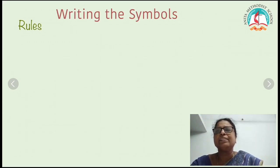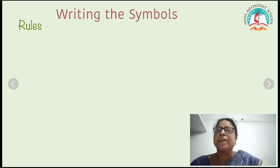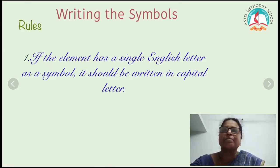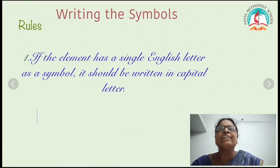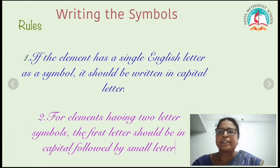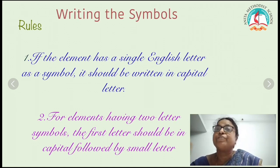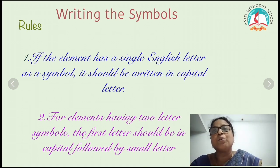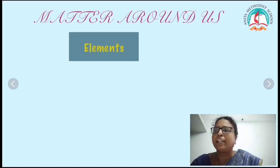Now the rules for writing symbols: if the element has a single letter as a symbol, it should be written in capital. If the element has a two-letter symbol, the first letter should be capital followed by a small letter — for example, calcium is Ca, where C is capital and a is small.